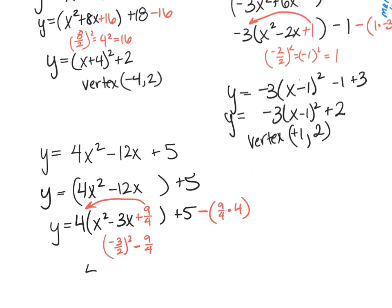So this factors to 4 times x minus 3 halves squared. Remember that this term, when I take b divided by 2, helps us figure out how to factor it. That is x minus 3 halves. That's how it's going to factor, especially when I get fractions. And then 5 minus 9, because the 4s cancel and I get 9. So 5 minus 9 is minus 4. And your vertex is at 3 halves, negative 4.